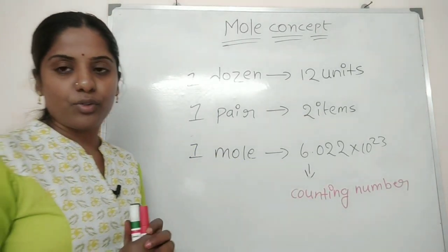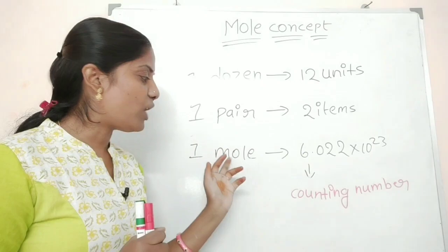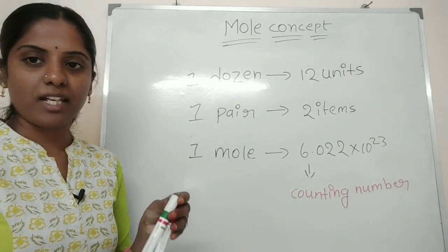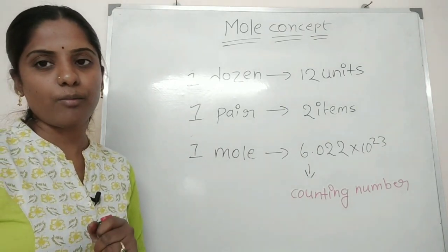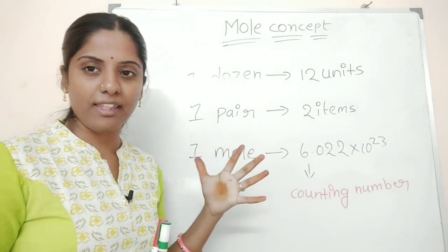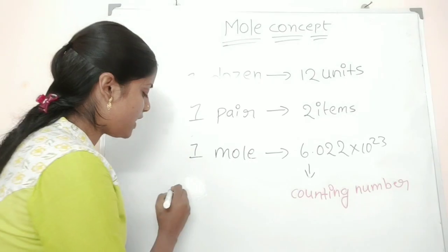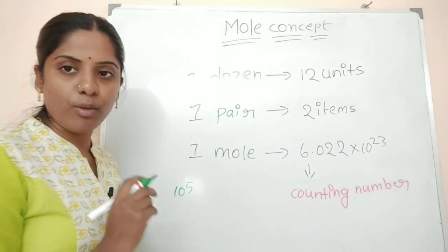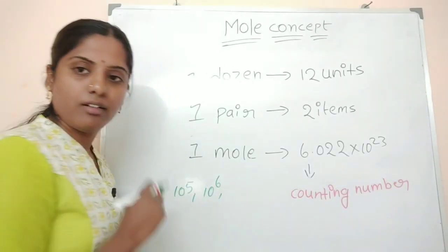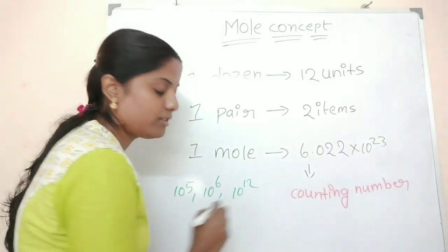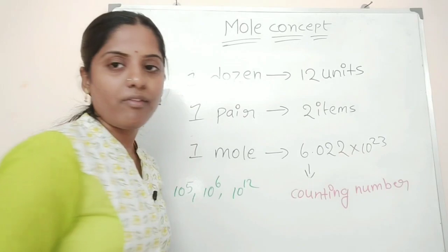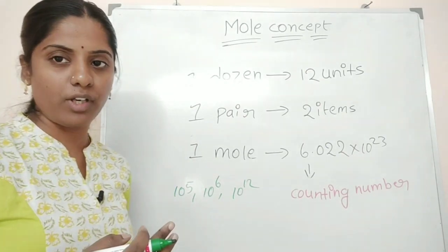Now, let's look at 1 mole of pens, 1 mole of sugar, 1 mole of vegetables. Why do you want to use it? It is a huge number. 10 to the power of 5 is 1 lakh, 10 to the power of 6 is 1 million, 10 to the power of 12 is 1 trillion — 1 lakh crore. And we are talking about 10 to the power of 23.